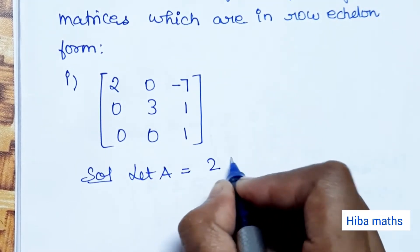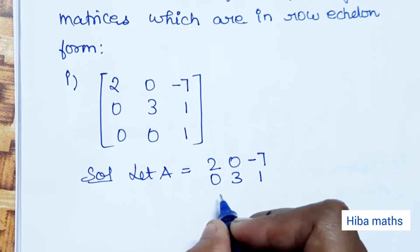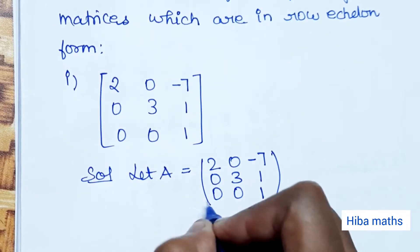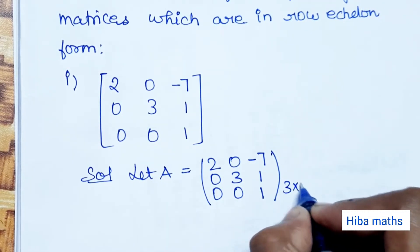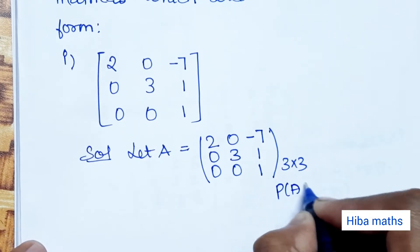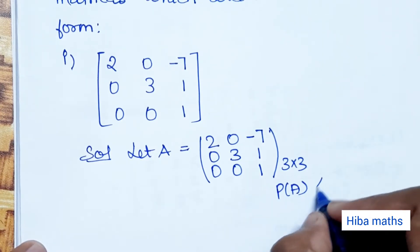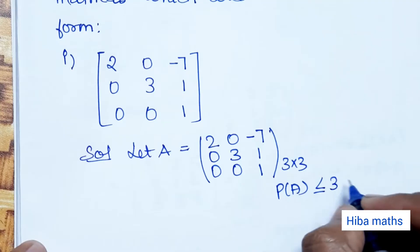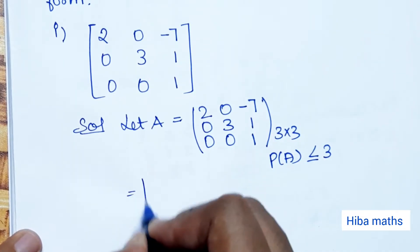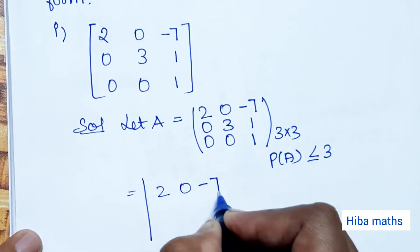Let A equal the matrix [2,0,-7; 0,3,1; 0,0,1]. The order of this matrix is 3 by 3, so the rank of A is less than or equal to 3. Now we need to find the determinant of the matrix.